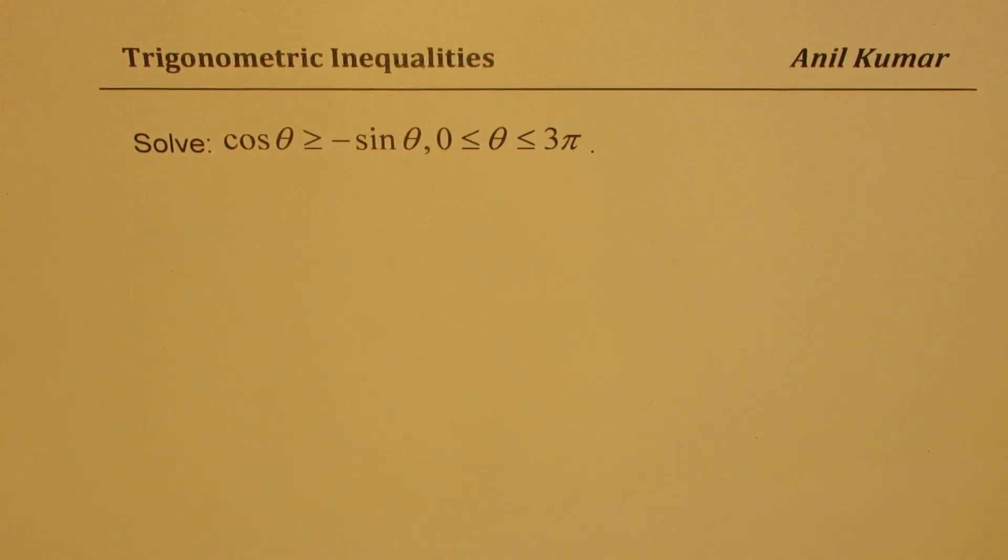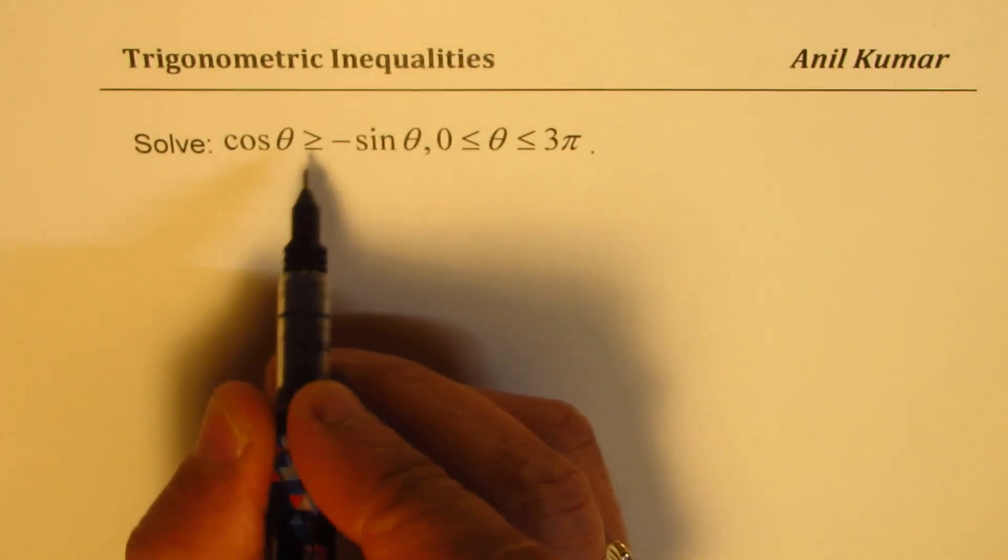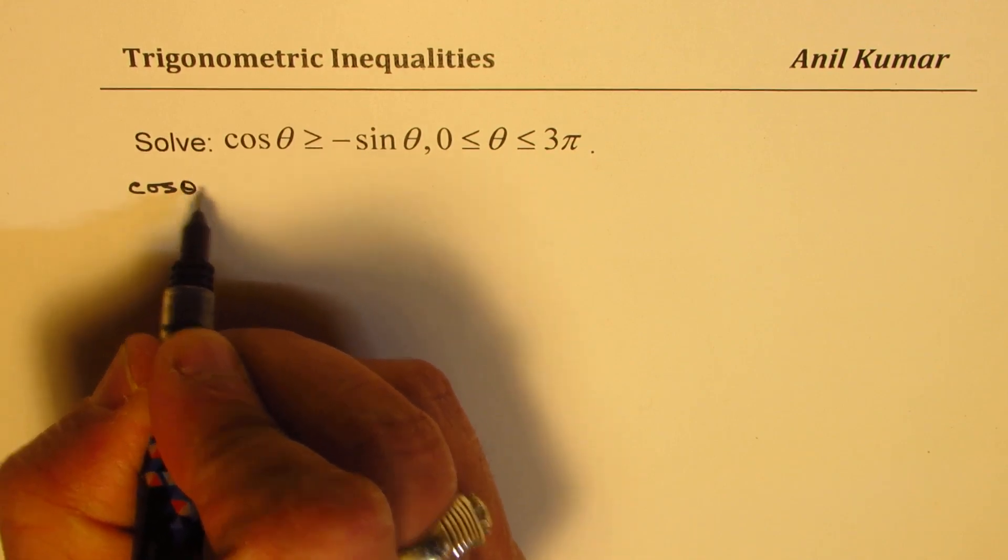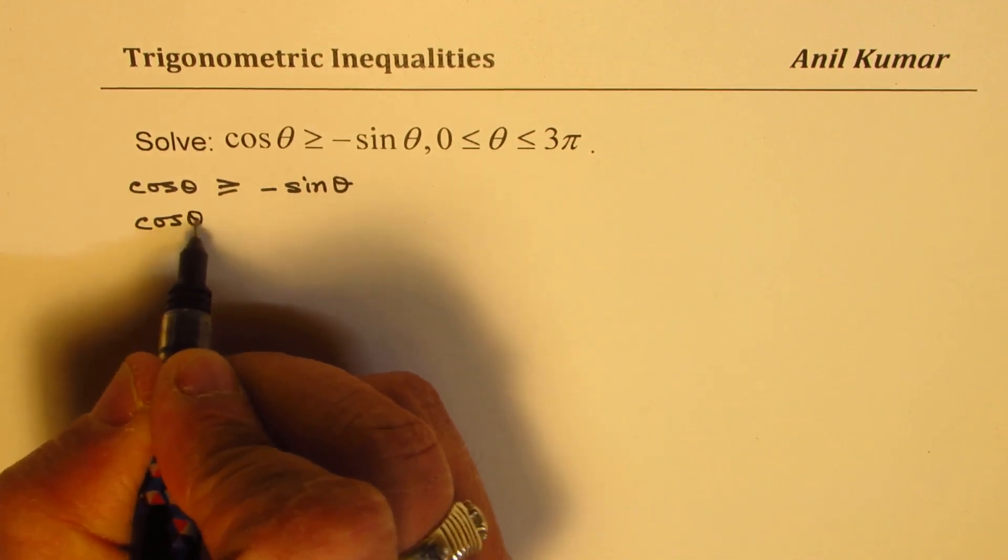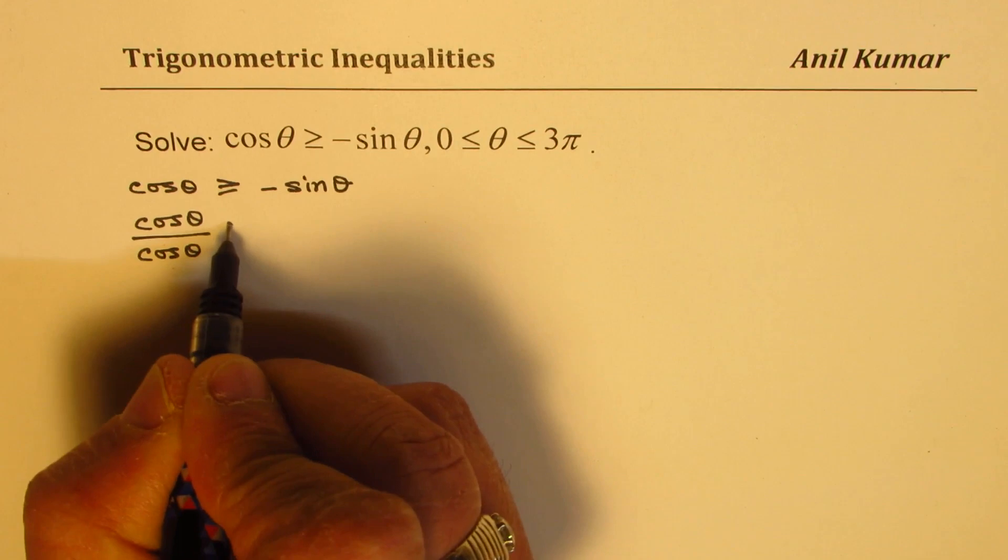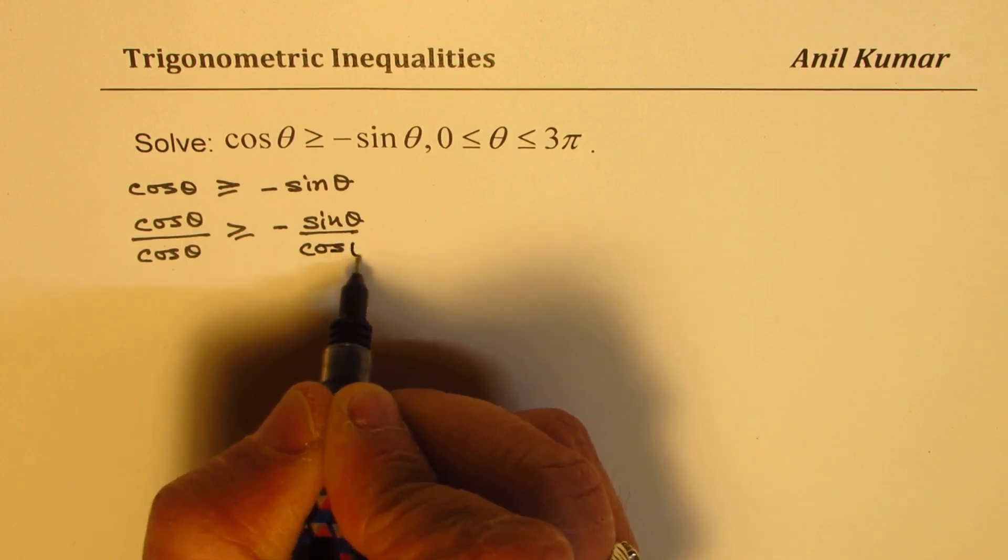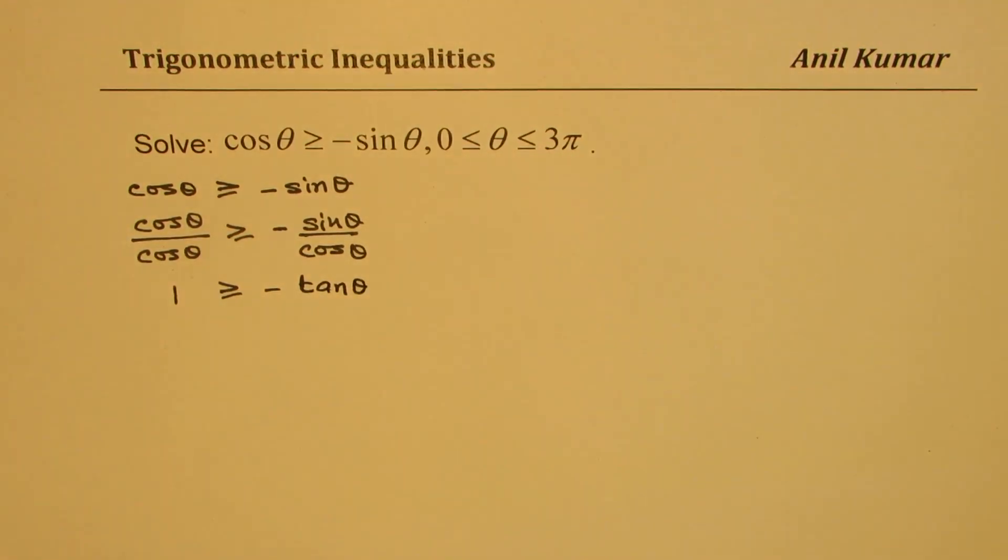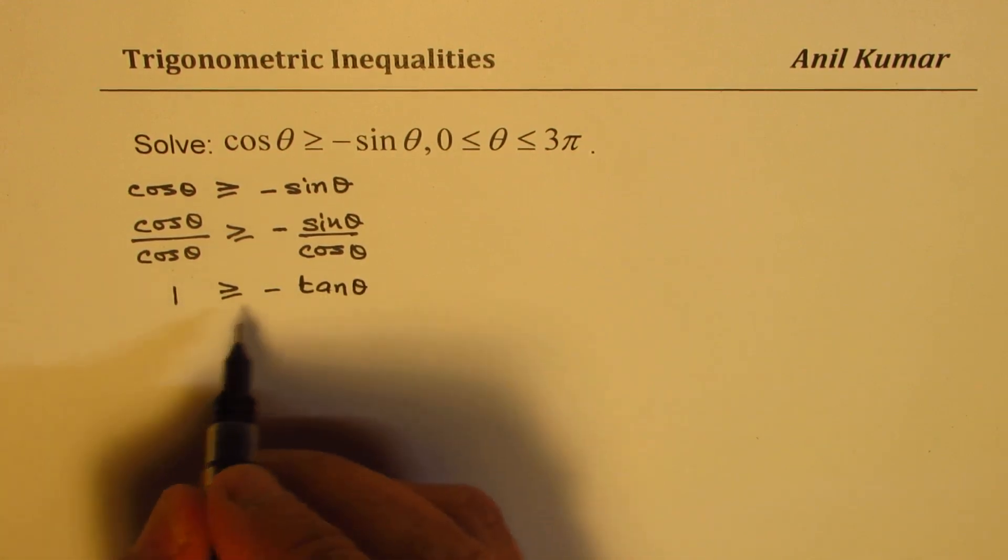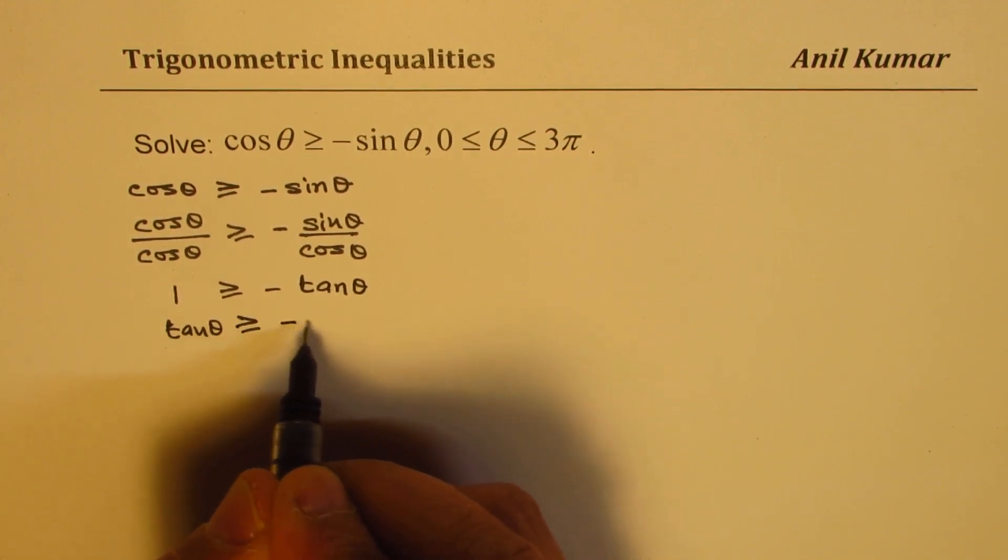We will begin solving this inequality by dividing both sides by cos θ. So we have cos θ ≥ -sin θ. If I divide by cos θ both sides, I get 1 ≥ -tan θ. I could take tan θ on this side and rewrite this as tan θ ≥ -1.